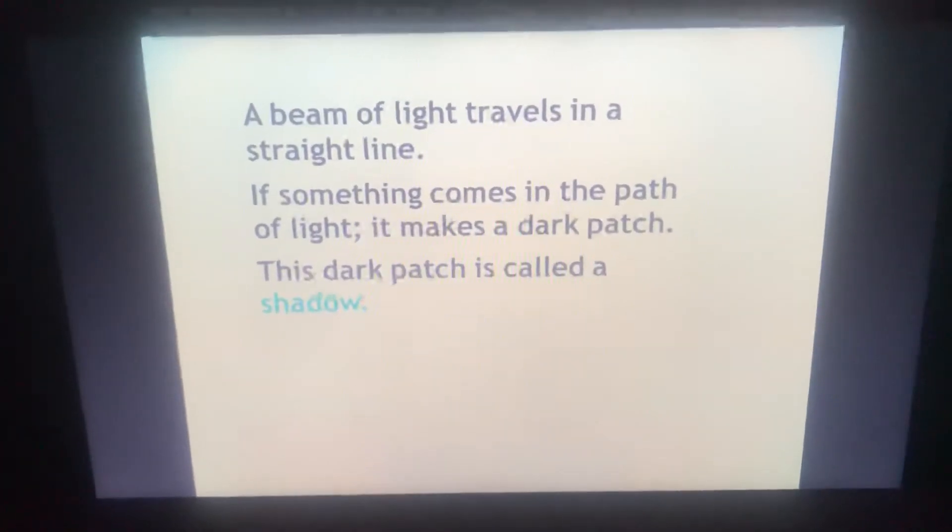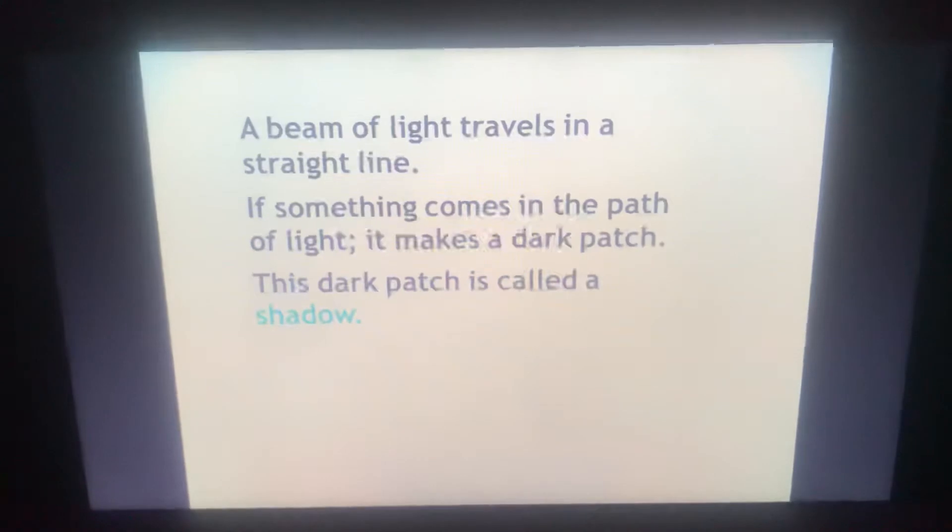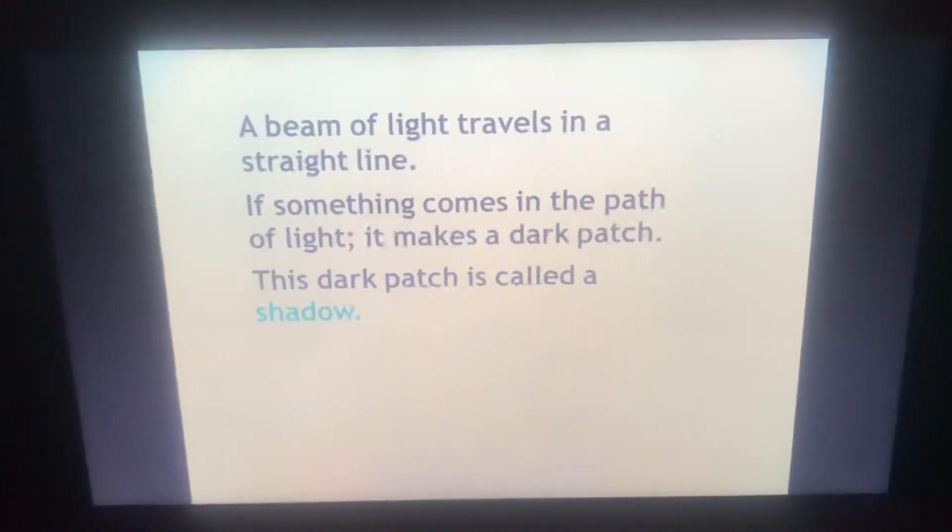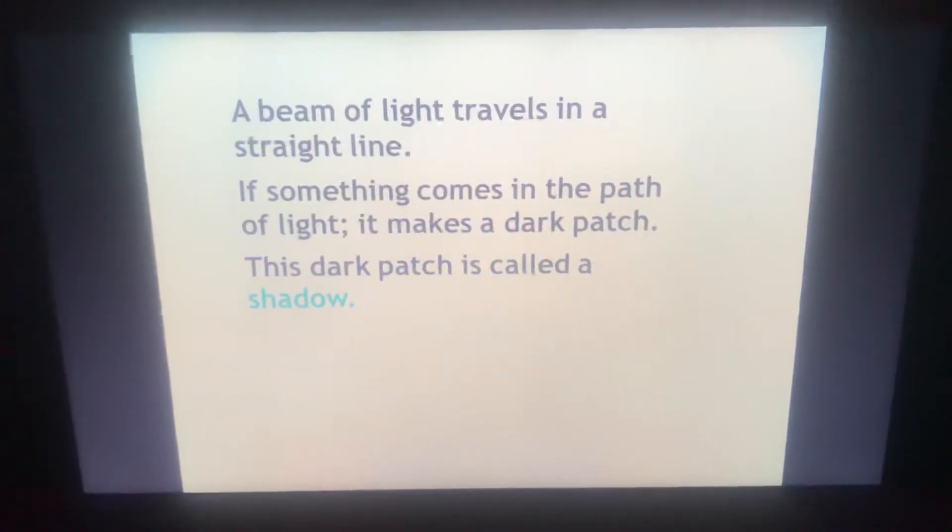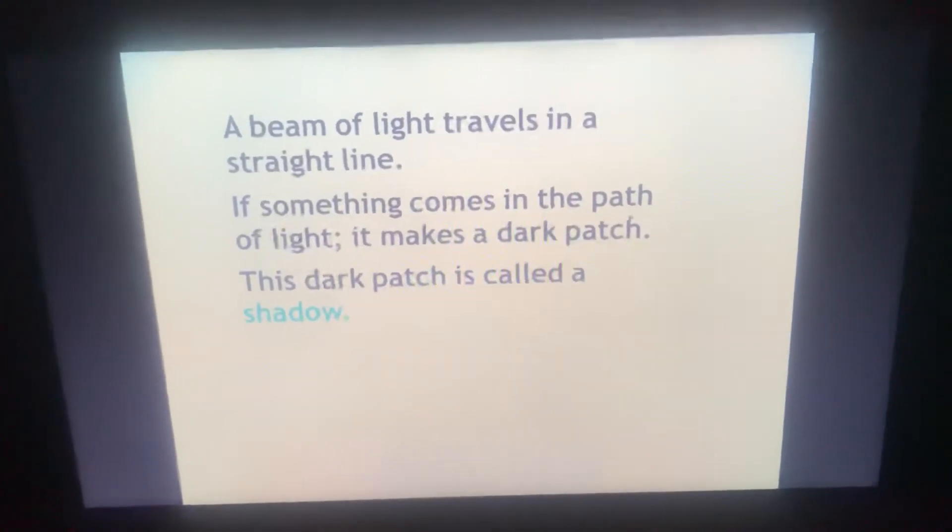Again, a beam of light travels in a straight line. If something comes in the path of light, it makes a dark patch. This dark patch is called Shadow.